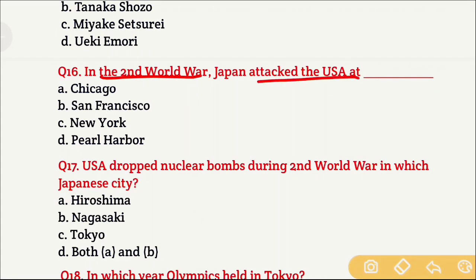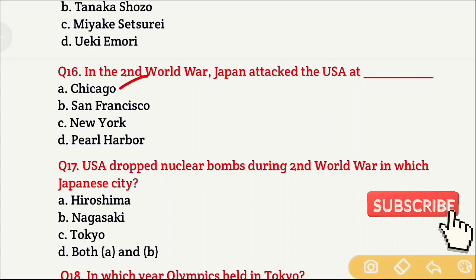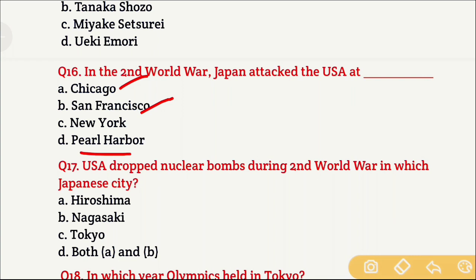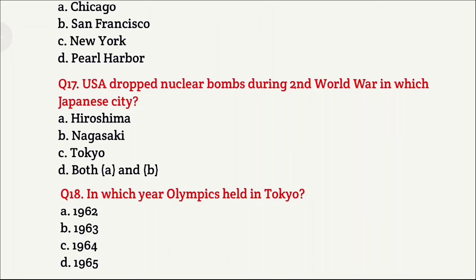Question 16: In the Second World War, Japan attacked the USA at — Option A is Chicago, Option B is San Francisco, Option C is New York, and Option D is Pearl Harbor. The right answer is Option D, which is Pearl Harbor.